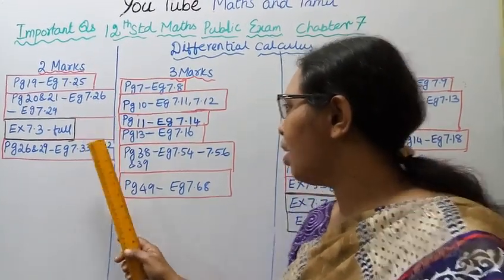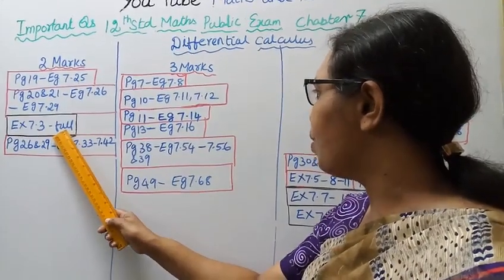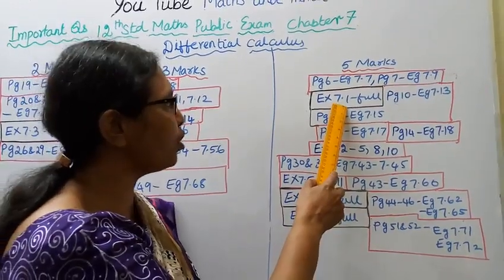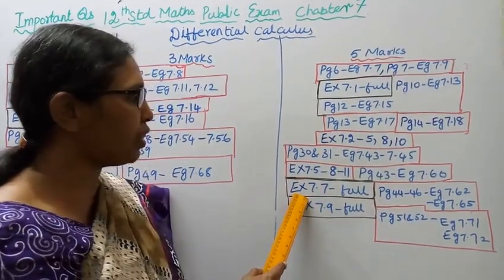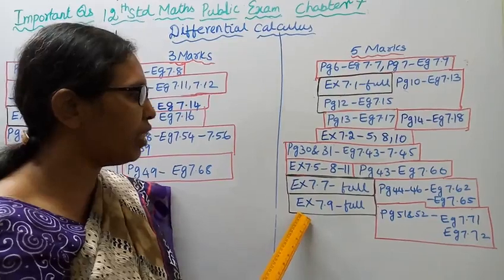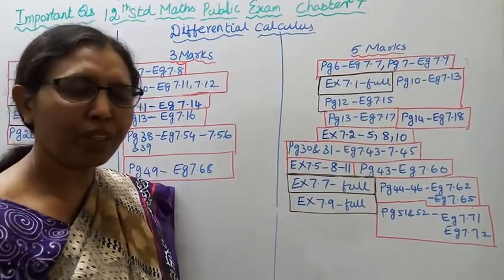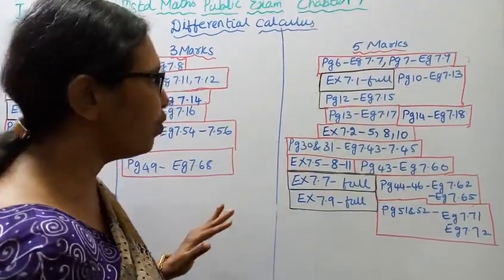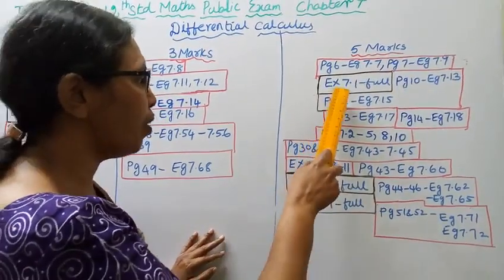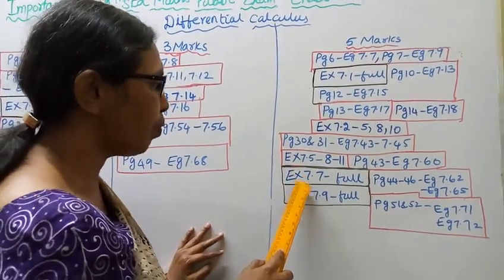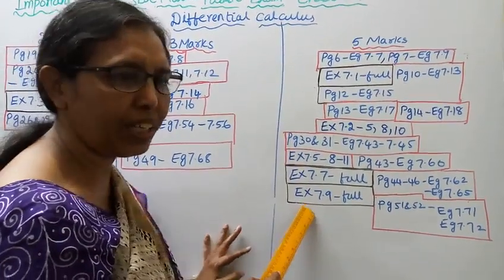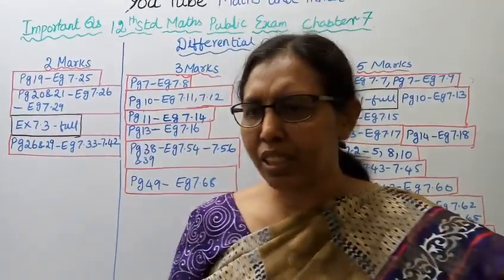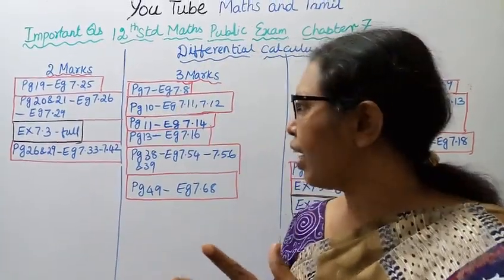I have done all exercises fully. Exercise 7.3 full practice is noted. Exercise 7.1 full practice is noted. Exercise 7.7 full practice is noted. Exercise 7.9 full practice is noted. Don't leave any other chapter's exercises. In differential calculus, exercises 7.1, 7.3, 7.7, and 7.9 are the most important — make sure you complete all of them.